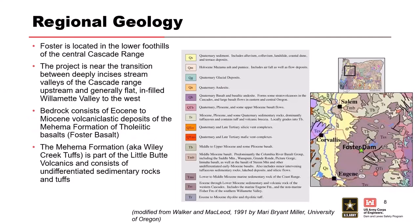Foster is in the lower foothills of the Central Cascade Range. It's near the transition between really deeply incised stream valleys in the Cascades, right as you're entering the Willamette Valley and things start to flatten out. It consists of Eocene to Miocene volcanoclastic rock of the Mehama Formation. There's also Foster Basalt, which is really where the penstocks come through. But we're going to be focusing on the volcanoclastic rocks that make up the spillway foundation.